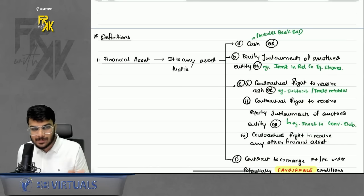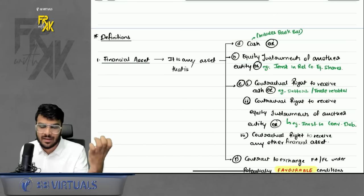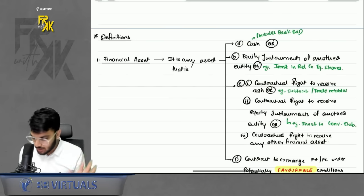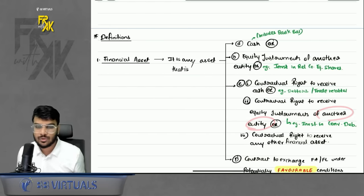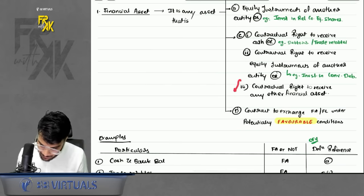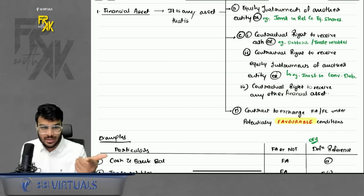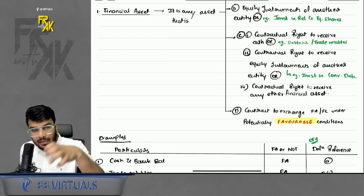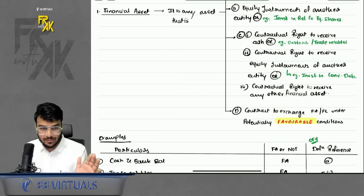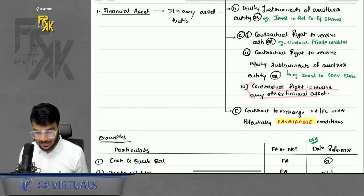Under a convertible debenture, for the interest part you receive cash, but for the principal part you receive equity shares of that company — that is a contractual right to receive equity instruments. C3 is a contractual right to receive any other financial asset, for example, trade receivable giving you bills receivable.